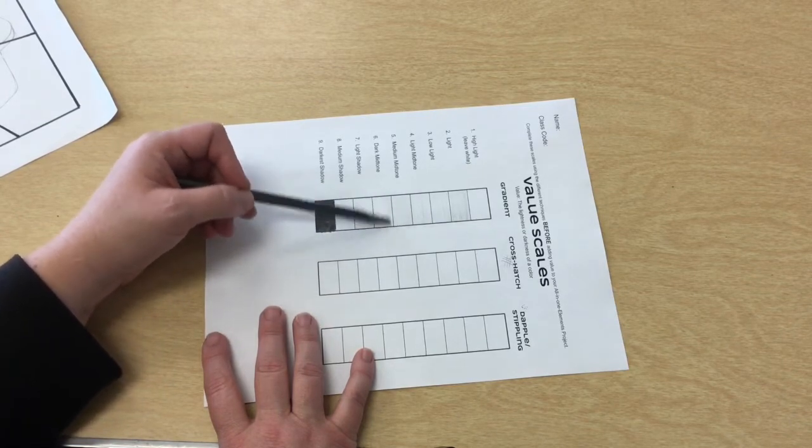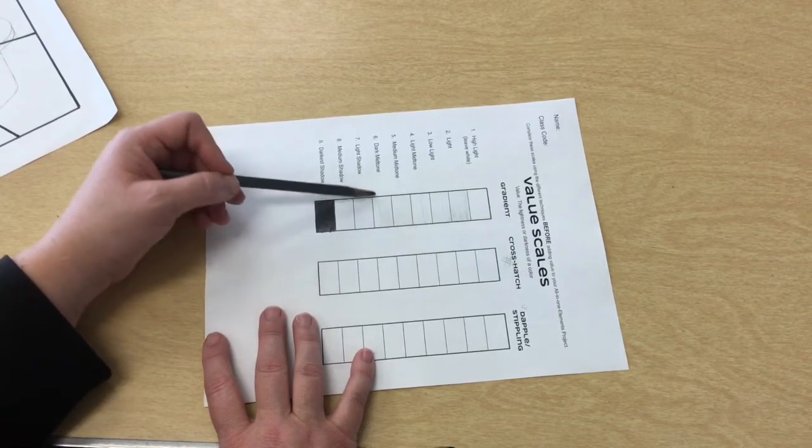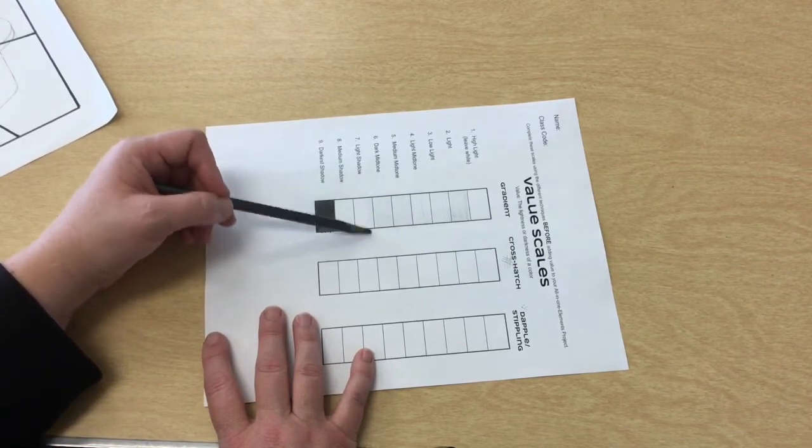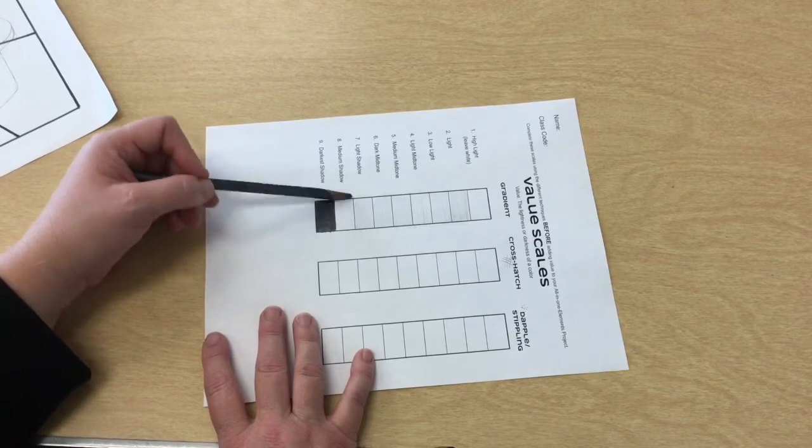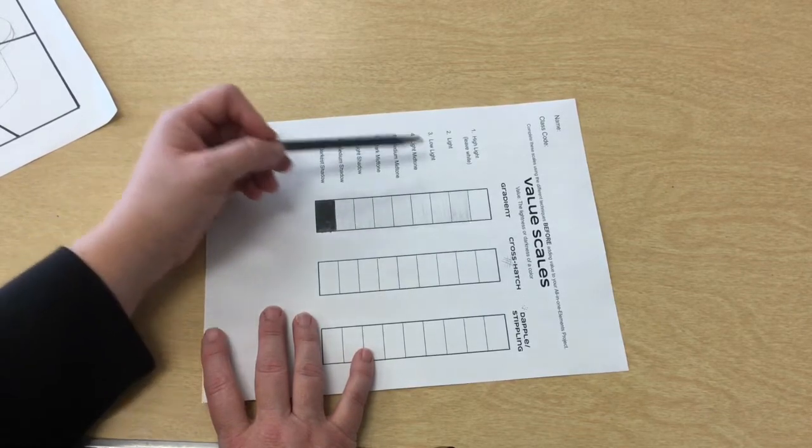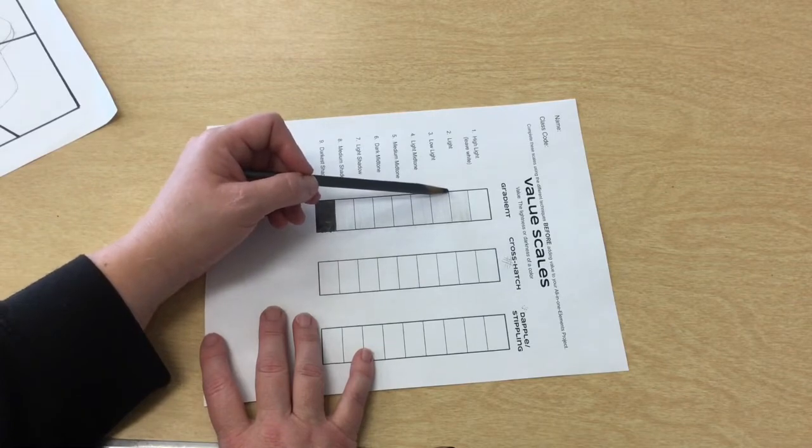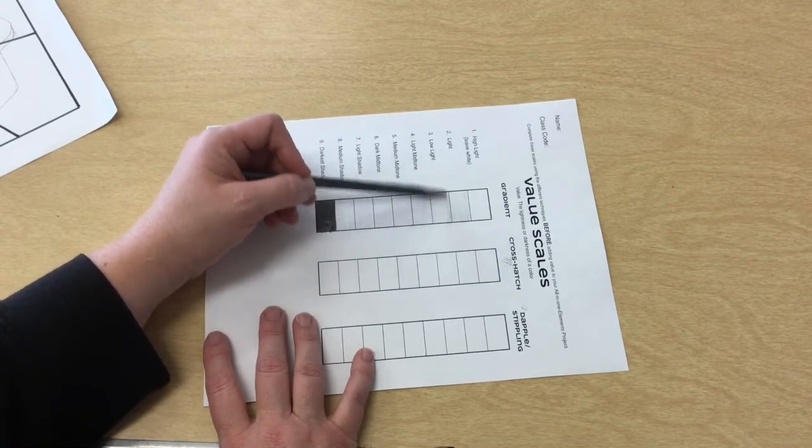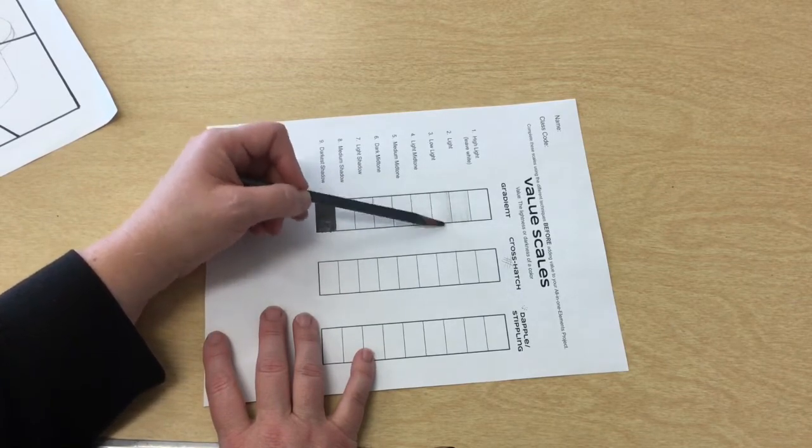And because this is a practice I am not too concerned that I'm going outside of my lines. So I'm just gonna go all the way down with the lightest pressure. Now my job is to go back to this one and I can press down a little bit harder or I can just go over it one more time.